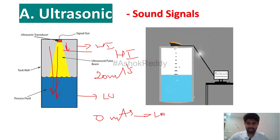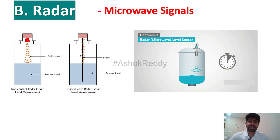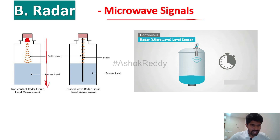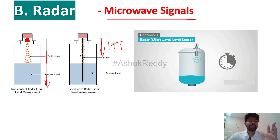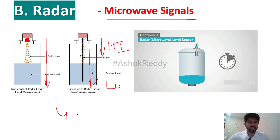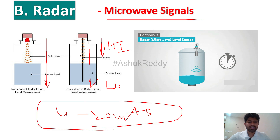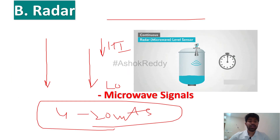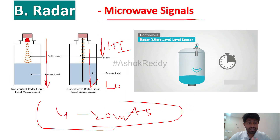Radar works on the same concept, but here we are sending microwave signals. If the signal travels a very short distance, it means the level is very high. If it travels a longer distance, the level is very low. Both ultrasonic and radar work with 4 to 20 milliamps and the same principle, but with different technology — ultrasonic uses sound signals and radar uses microwave signals.